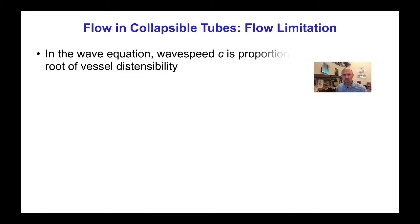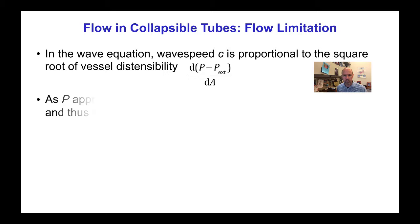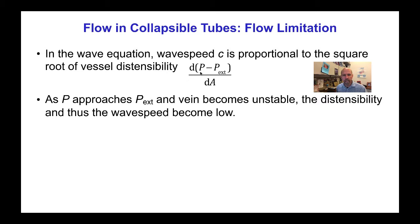Recall that in the wave equation the wave speed c was proportional to the square root of the vessel distensibility dP/dA, or more correctly d(P − P_external)/dA. Therefore, as P approaches P_external and the vein becomes unstable, the distensibility and thus the wave speed become lower and lower on that flat part of the curve in the previous slide.